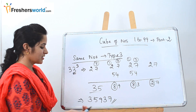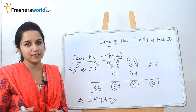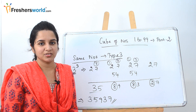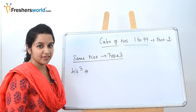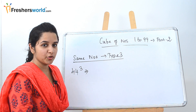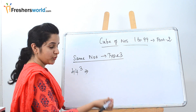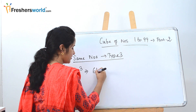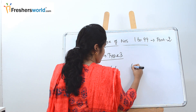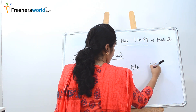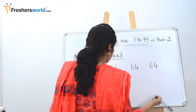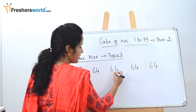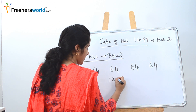So 33 cube is 35,937. To recap Type 3: find the cube of the digit — 3 cube is 27 — write it across all four positions, multiply the middle two by 2 to get 54 and 54, then add to get the answer. Now let's solve 44 cube. 4 cube is 64, so write 64, 64, 64, 64 across. Multiply the middle two digits by 2: 64 times 2 is 128.